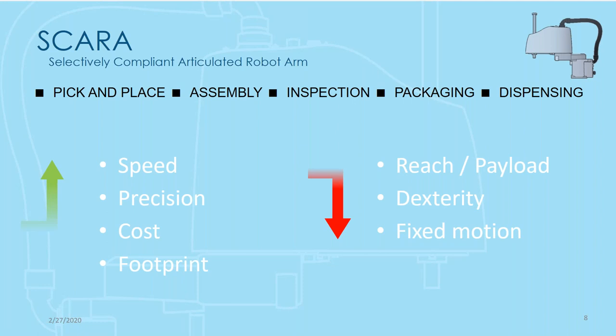The SCARA — Selectively Compliant Articulated Robot Arm — has two rotational joints and one linear joint. Each joint is compliant in one or two directions max, making it excellent for vertical assembly applications, pick-and-place, inspection, or dispensing. Where these really excel is speed and precision. They have a small footprint and can be reasonably priced compared to similar capacity robots. The downside is a limited range of reach and payload, and less dexterity.